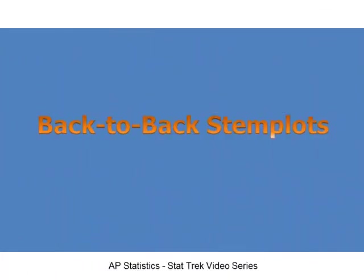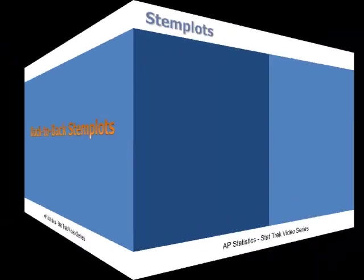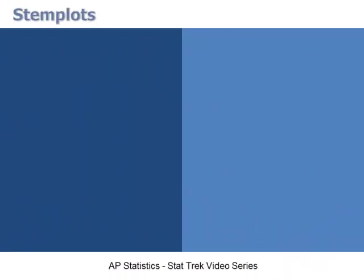Back-to-back stem plots are another graphic option for comparing quantitative variables from two data sets. The center of a back-to-back stem plot consists of a column of stems with a vertical line on each side. Leaves representing one data set extend from the right, and leaves representing the other data set extend from the left.